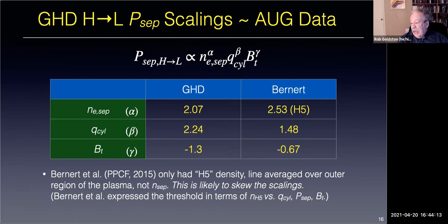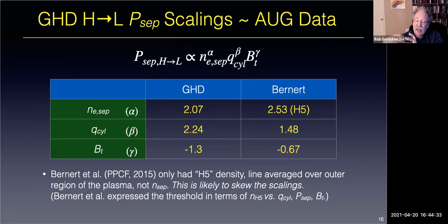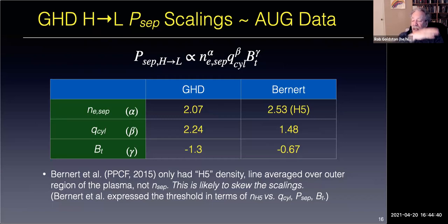On AUG, Matthias Bernard's thesis did work on H-to-L. That's what I can maybe predict with the GHD model—I have a model for the H-mode scrape-off width including collisionality. As it gets more collisional, it gets broader and broader, and then maybe it snaps out of H-mode.